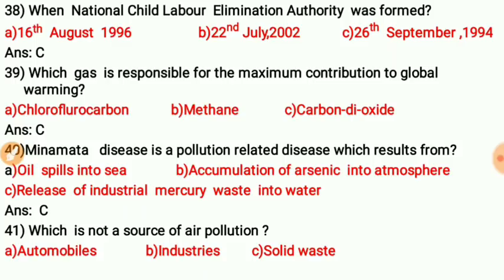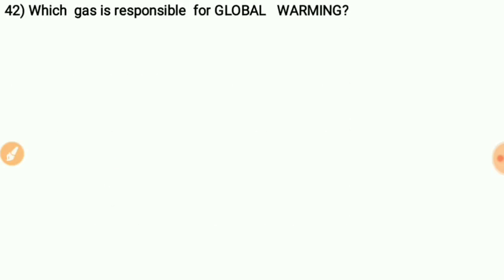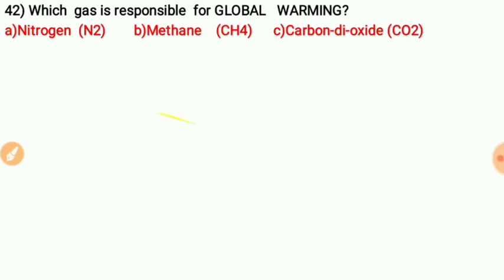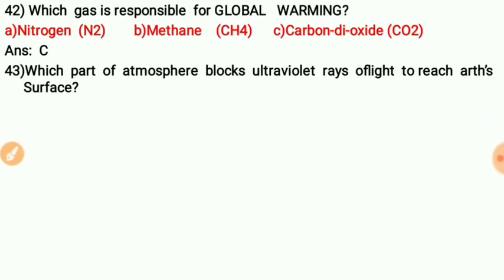Question thirty-nine: Which is NOT a source of air pollution? Solid waste is a source of air pollution. Automobile and industrial waste are the main causes of air pollution. Question forty: Which gas is responsible for global warming? Carbon dioxide — option C.